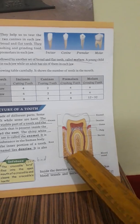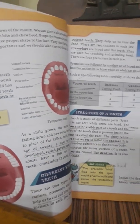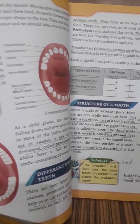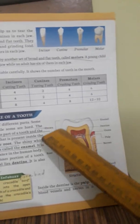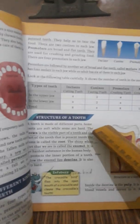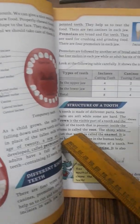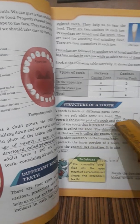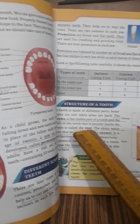Coming to the structure of a tooth — you can see the diagram here. A tooth is made up of different parts; some parts are soft while some are hard. The part of your tooth that we can see when you smile is called the crown. The part of the tooth which is present inside the gum is called the root.